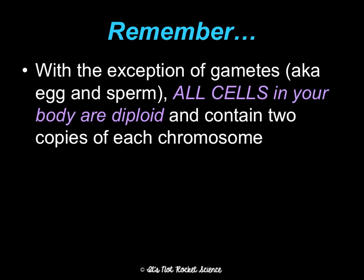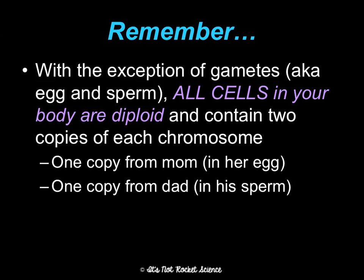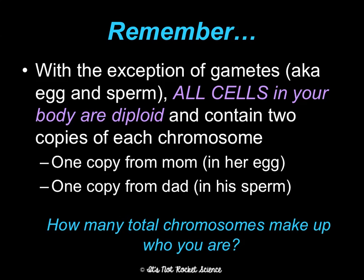I want to make sure you remember, with the exception of gametes, which are egg and sperm, all cells in your body are diploid, and they contain two copies of each chromosome — a copy that came from mom and her egg, and a copy that came from dad and his sperm. 46 chromosomes make you who you are: 23 that came in the egg and 23 that came in the sperm, and they fertilized as a zygote, and that's when you first had your 46.